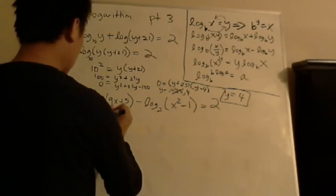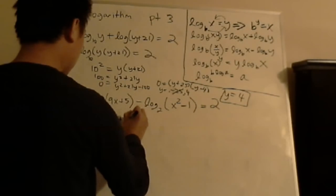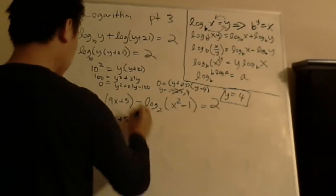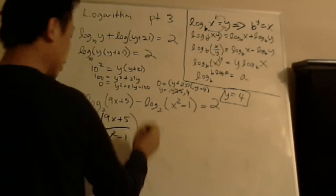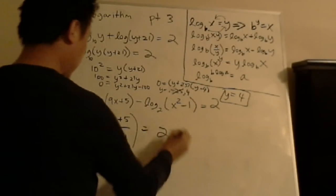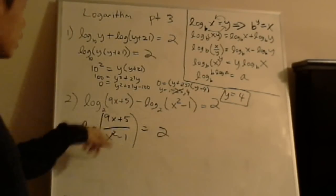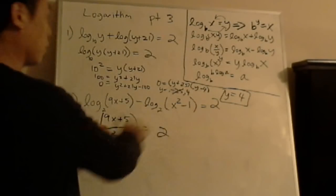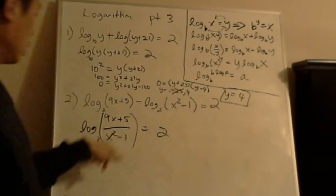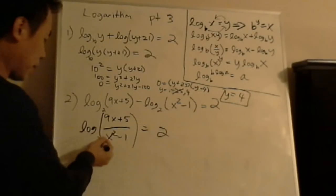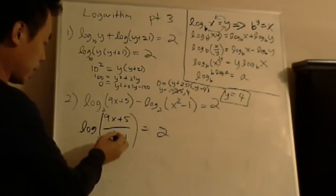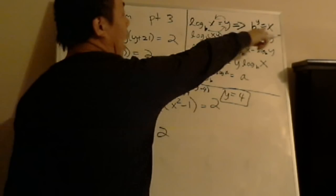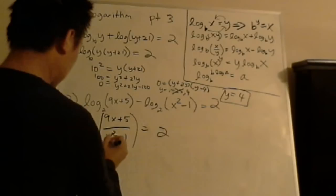So you'll get log base 2 of 9x plus 5 over x squared minus 1. You see how you take the division right here. When you're subtracting here, you divide. So now you get log base 2 of 9x plus 5 all over x squared minus 1 equals to 2. So we go back to the original theorem. Remember, b to the y equals to x? The little hook like this.